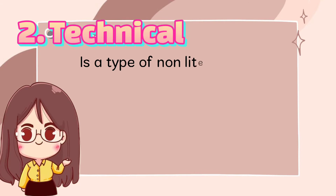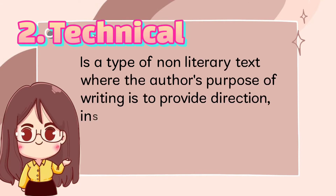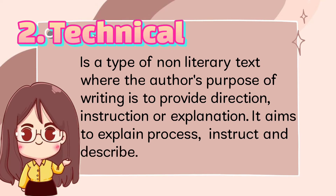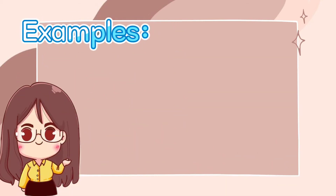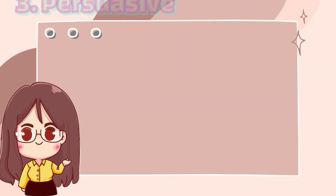Next, we have technical. Technical is a type of non-literary text where the author's purpose of writing is to provide direction, instruction, or explanation. It aims to explain, process, instruct, and describe. The following are examples of technical texts: manual, recipe, and directions.